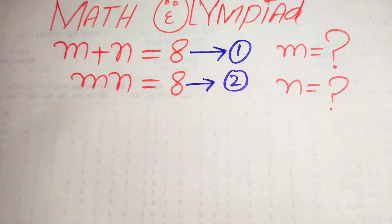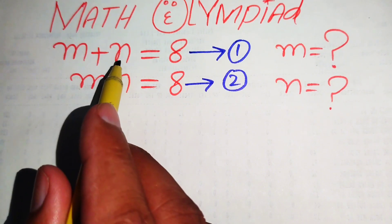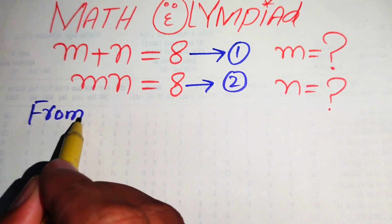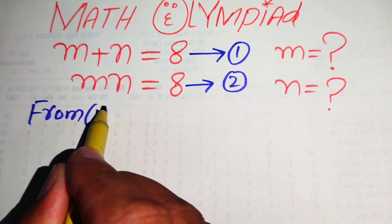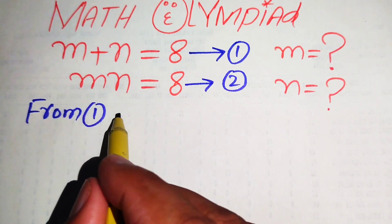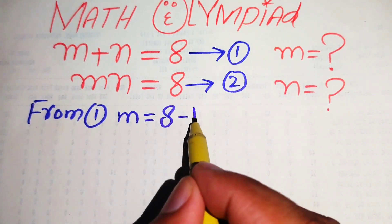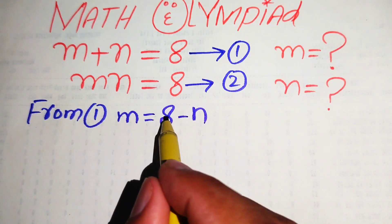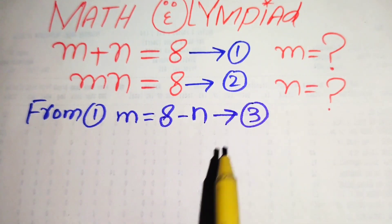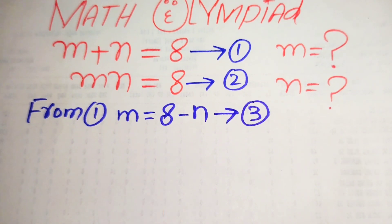In the next step, we focus on equation number one. We move n to the right hand side and we get the value of m equals to 8 minus n, and we call this equation number three.